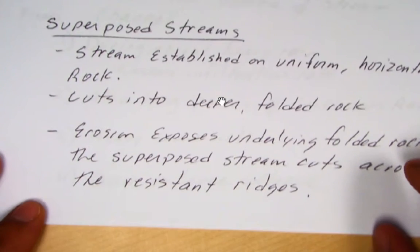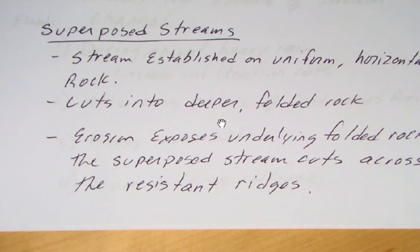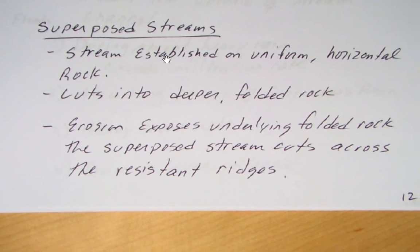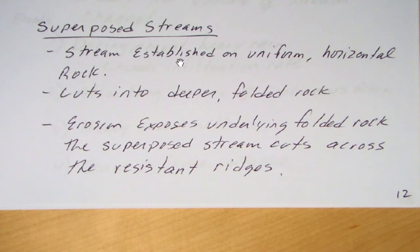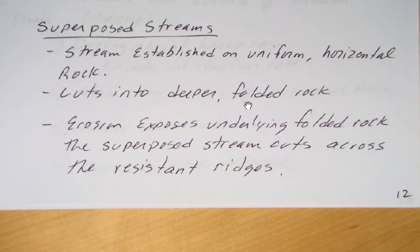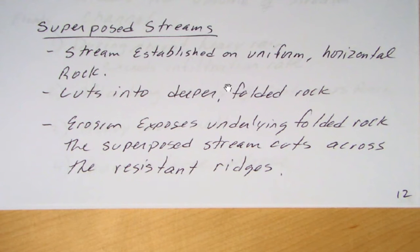The next topic is superposed streams and antecedent streams. A superposed stream is established on uniform horizontal bedrock, which overlies folded strata — there's an angular unconformity below. The river cuts into that folded rock, and erosion exposes the underlying folded rock. The superposed stream cuts into that more resistant rock. In the folded rock you'd expect to find a trellis drainage pattern, so a dendritic pattern already established can be superposed onto the folded rock.